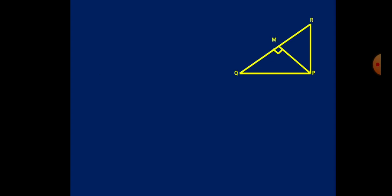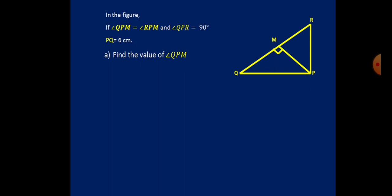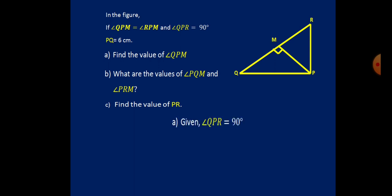Finally, we have a creative question taken from your book. In the figure, angles QPM and RPM are the same. Angle QPR is a right angle, and side PQ is 6 centimeters. The questions are: find angle QPM, find angles PQM and PRM, and find the value of PR.